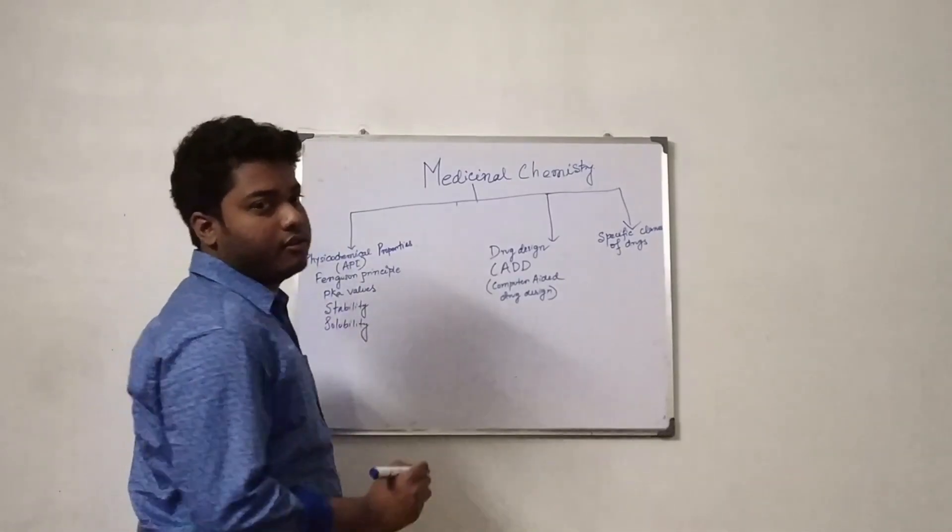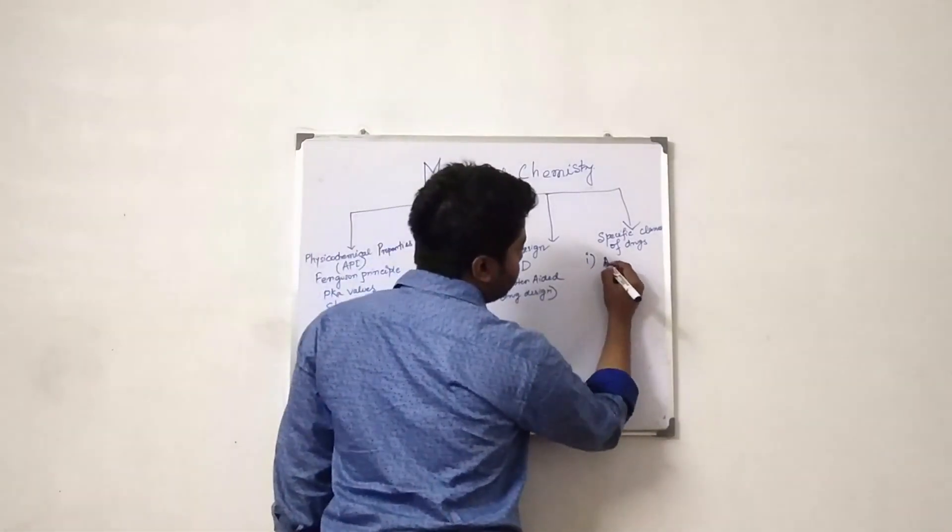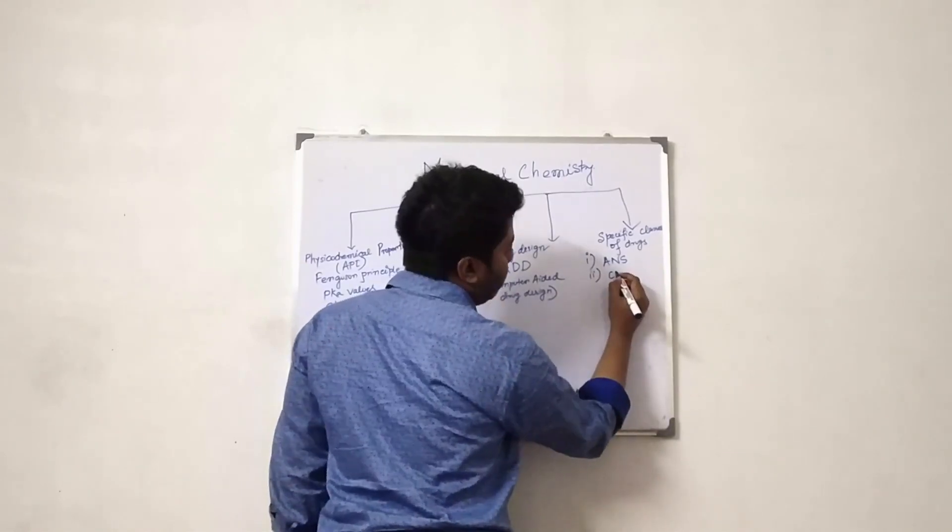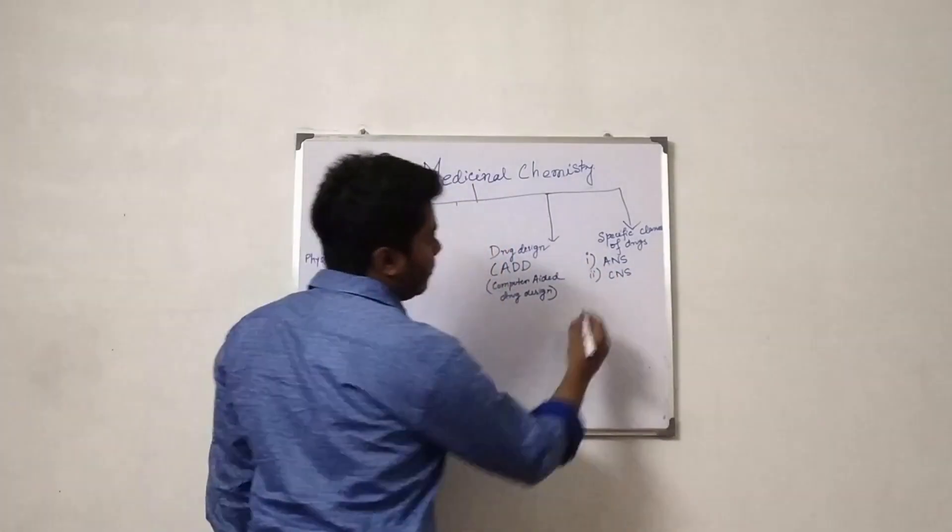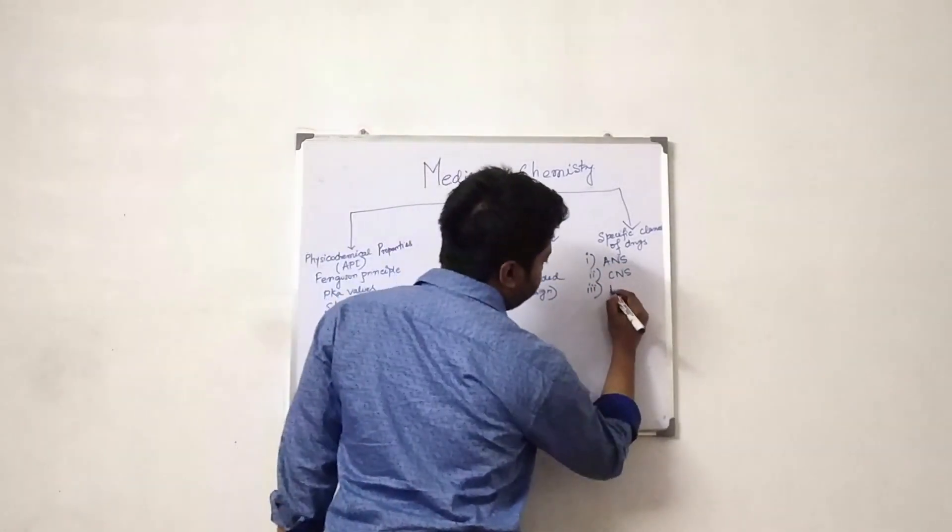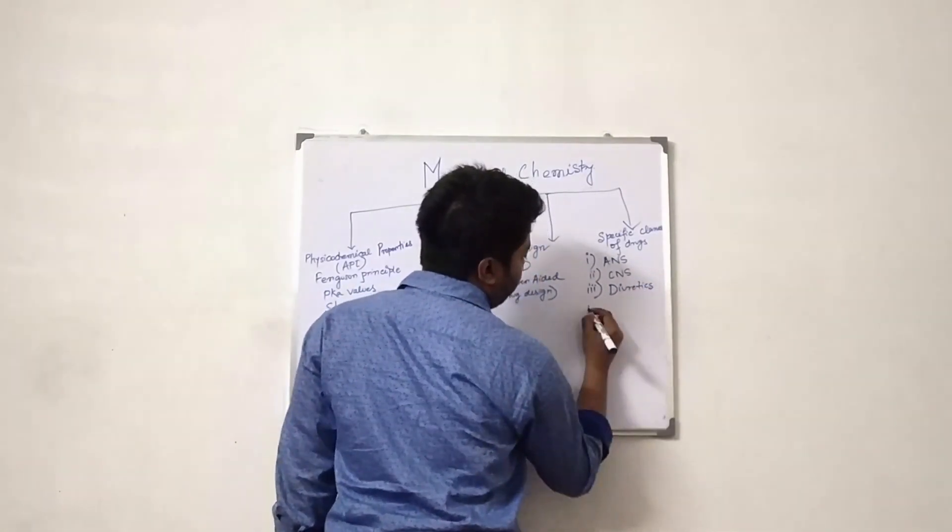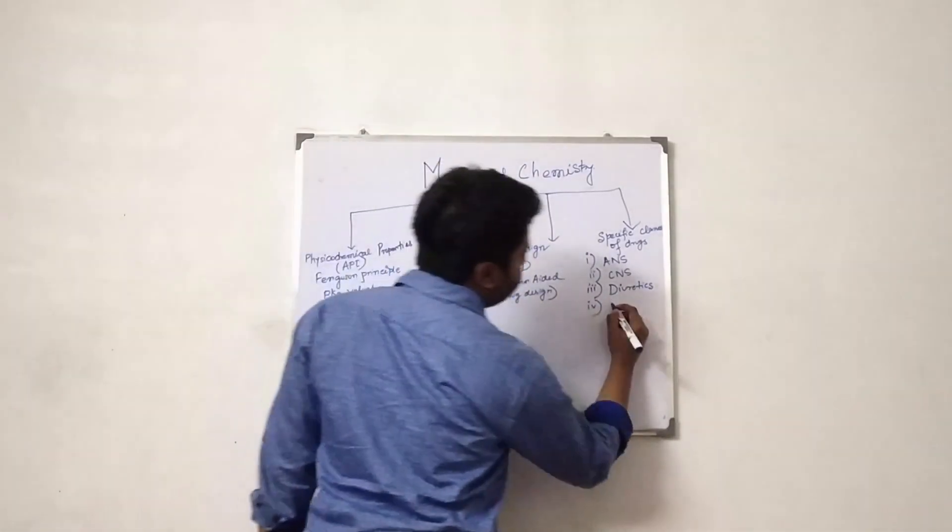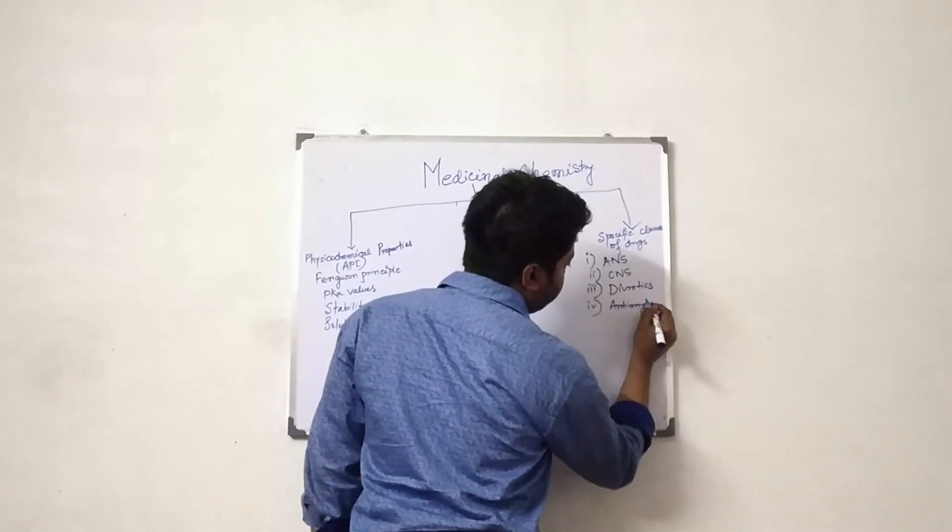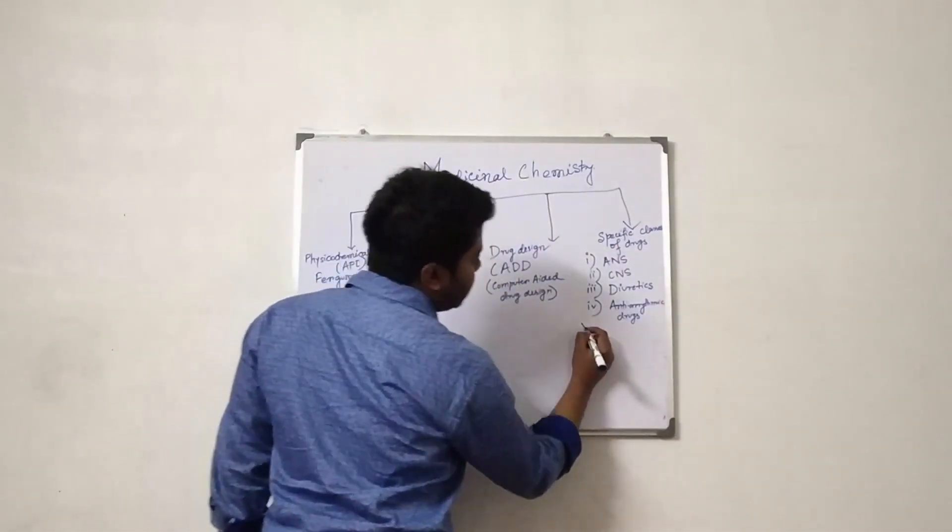For the specific classes of drugs, we can study drugs affecting the autonomic nervous system, drugs affecting central nervous system, diuretics, anti-allergenic drugs, and anti-enzyme drugs.